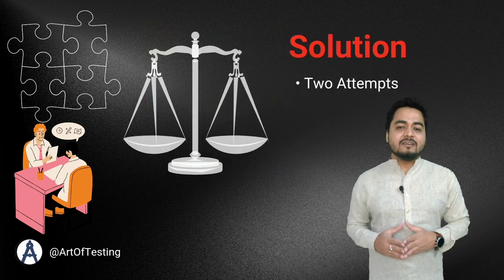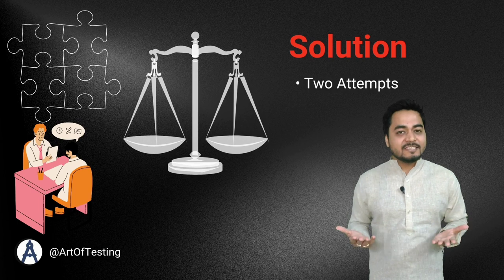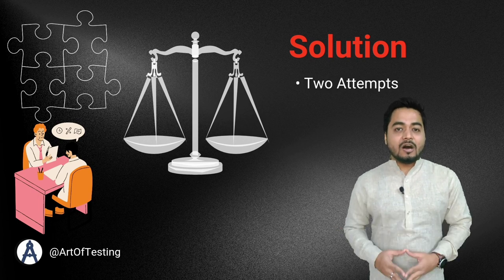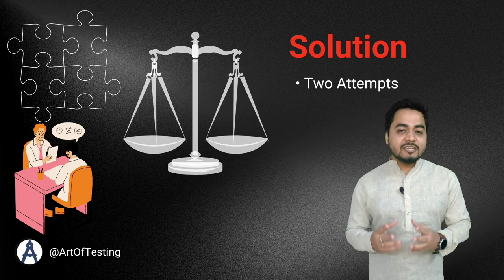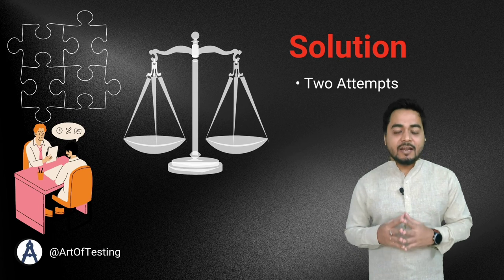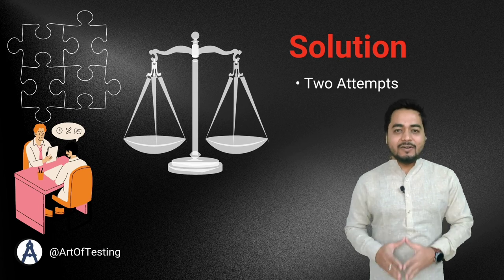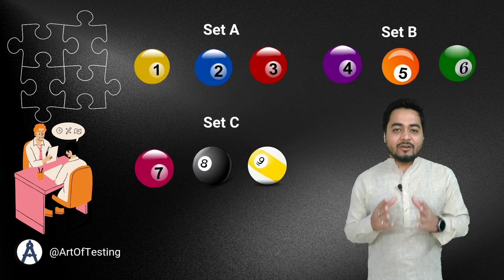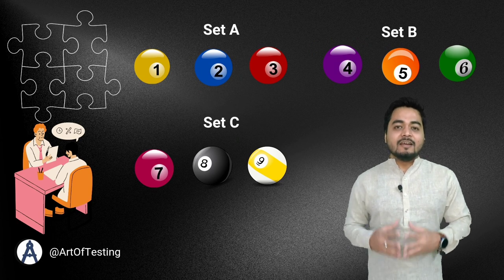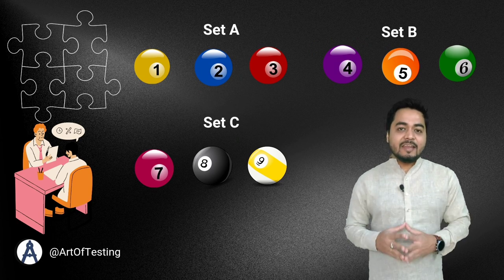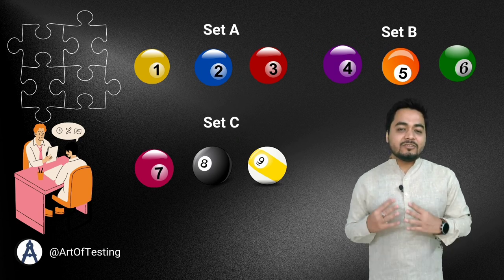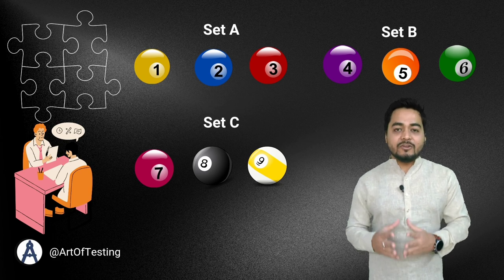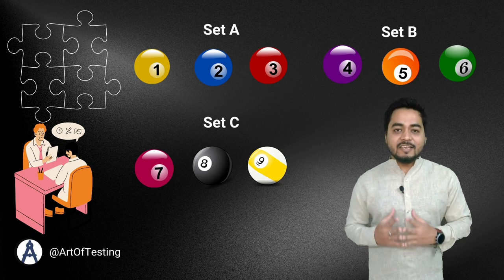Using a manual balance with two sides, we can easily find out the odd ball out in just two attempts. Let us understand. Given 9 balls, you divide these 9 balls into 3 sets where each set will have 3 balls each.